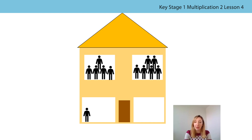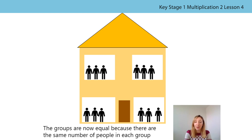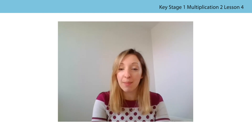Remember, for the groups to be equal, we want the same number of people in each of the groups. Let's move those people. Are the groups equal now? They are, aren't they? The groups are equal now because there are the same number of people in each group. Does yours look like mine? Amazing, well done. You are so good at spotting equal and unequal groups and moving objects to make the unequal groups equal now. Well done.